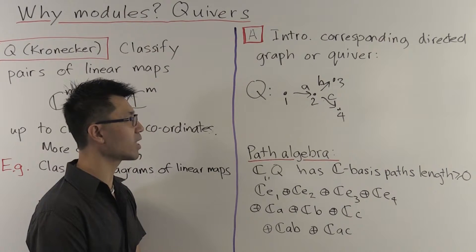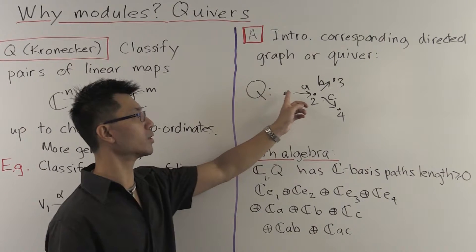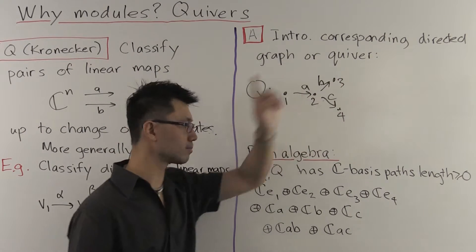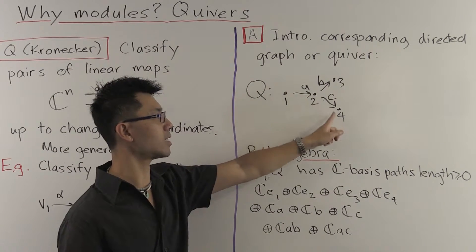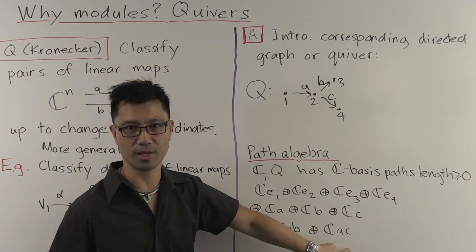And finally, you have paths of length 2. You can go A and then B, giving you AB as a basis vector. And A, C, giving you another basis vector.